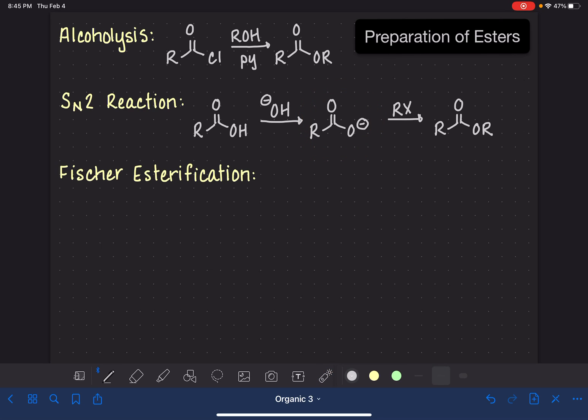The third reaction that we're going to look at is called the Fischer esterification reaction. This also uses a carboxylic acid. This is reacting a carboxylic acid with an alcohol, and this requires an acid catalyst. This reaction produces an ester and also makes water. Sometimes in homework problems, they want you to show that water is a byproduct of the reaction.